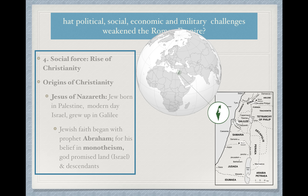The most important factor, however, is the rise of Christianity, which is going to really weaken the Roman Empire as a whole. Label number four — the social force is the rise of Christianity. On the left-hand side of your notes, put origins of Christianity, because we're going to talk about what it is and how it begins to affect the empire. Christianity begins with Jesus of Nazareth, who was a Jew born in what was then called Palestine — modern-day Israel. He grew up in the region known as Galilee. To understand his faith: the Jewish faith began with the prophet Abraham, who because of his belief in monotheism — the belief in one God — was promised land, the land of Israel, and descendants who would share his beliefs.